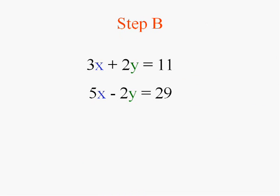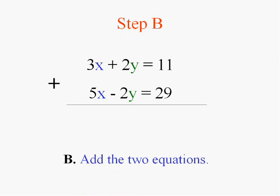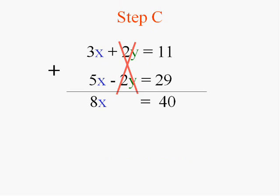So we're going to move right to step B and add the two equations. The reason I'll add them with the opposites is that now the y's will cancel out, won't they? Positive 2 and negative 2 make 0 and I'll have 8x equals 11 plus 29, 40.